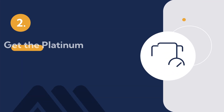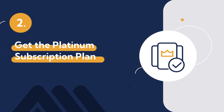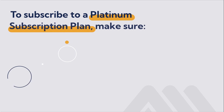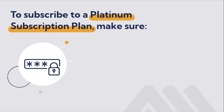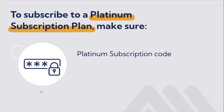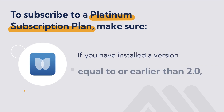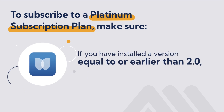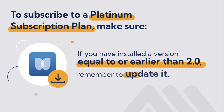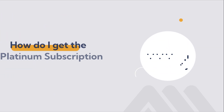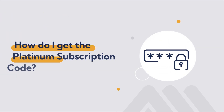Get the Platinum Subscription Plan. To subscribe to a Platinum Subscription Plan, make sure you have the Platinum Subscription Code, made of 8 alphanumeric digits. If you have installed a version equal to or earlier than 2.0, remember to update it.